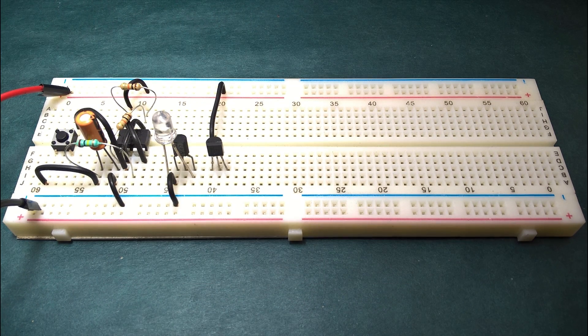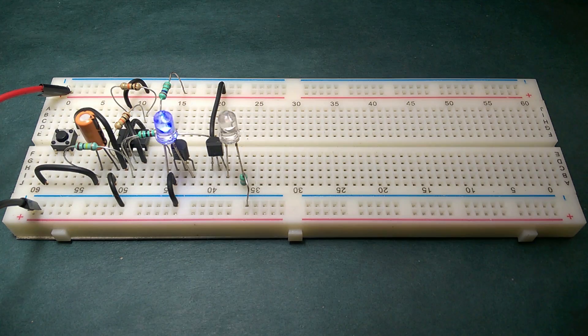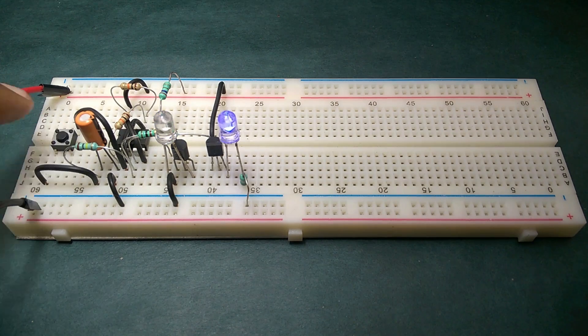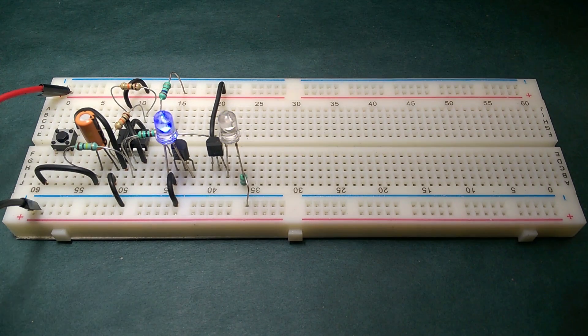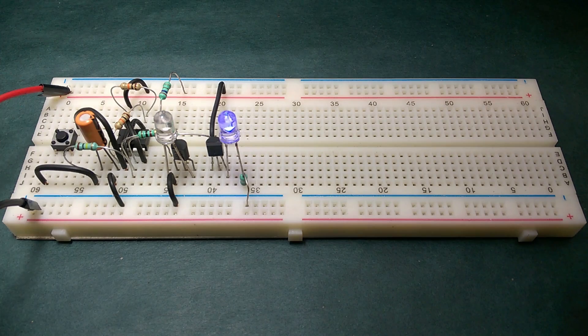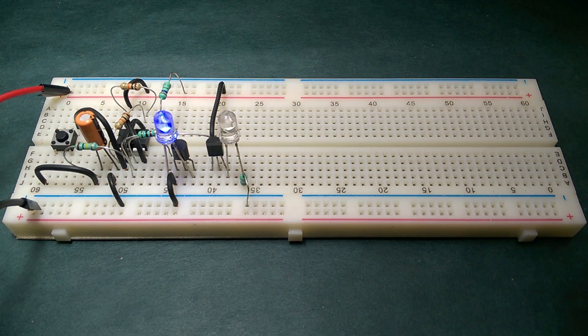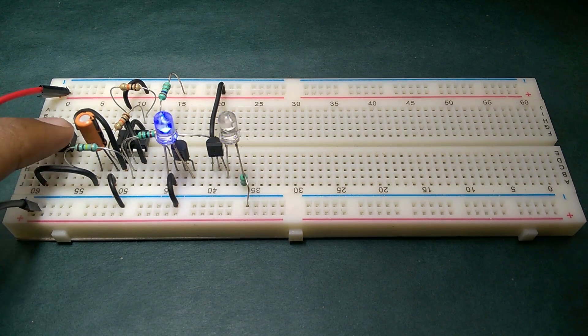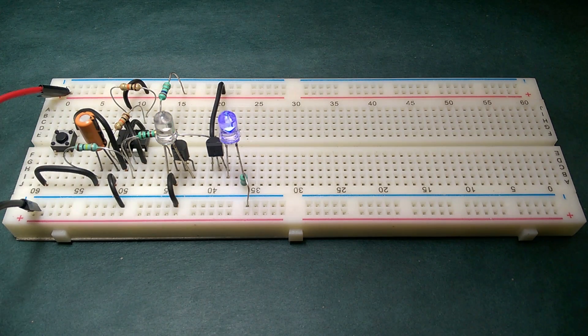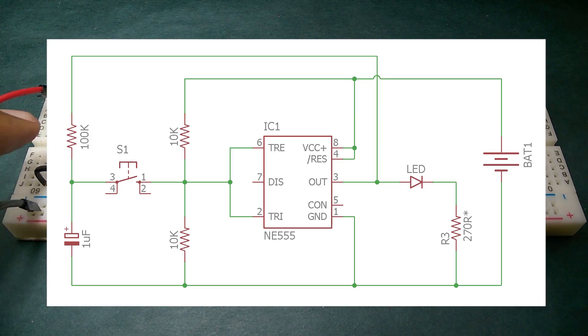We can also extend this circuit by adding transistors which allows toggling of two outputs on and off with a single push button switch. You can use a buzzer, motor, relay or any other output device. Please refer to the description for more information, components required as well as link to the circuit diagram.